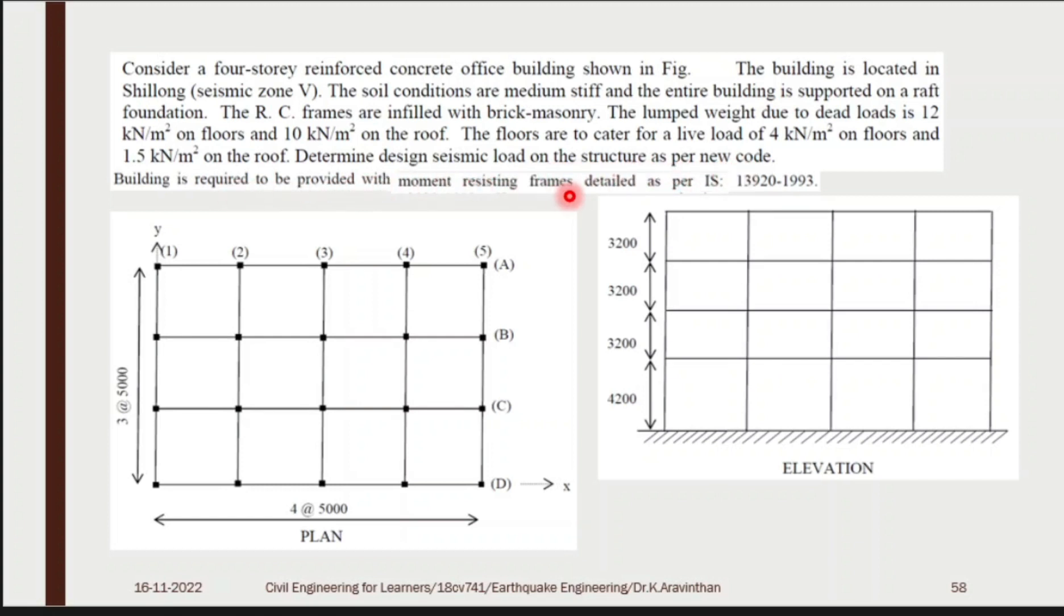Determine the design seismic load on the structure as per new code. So this is a moment resisting frame and detailing is done by IS 13920, known as special moment resisting frame. So with this data you have to find the seismic load in each floor. Up to 15 meter height you can use equivalent static load. What is the height of the building? This is 4.2, 3.2, 3.2, 3.2. What is total height? 13.8 meters. So if it is below 15 meters you can use equivalent static load.